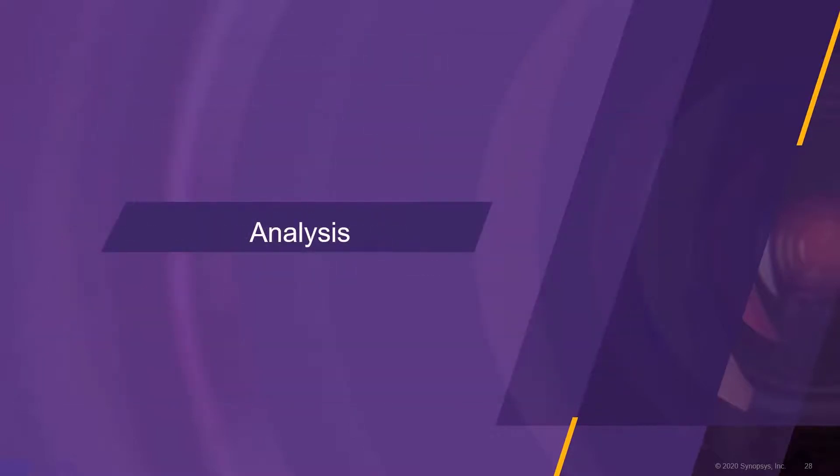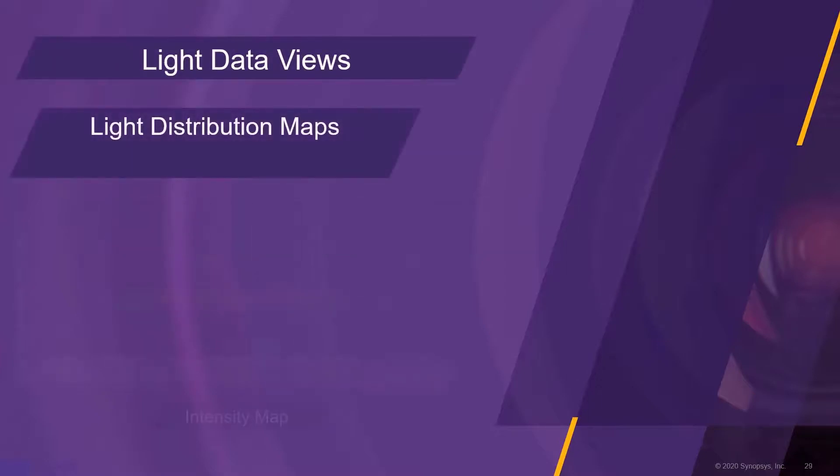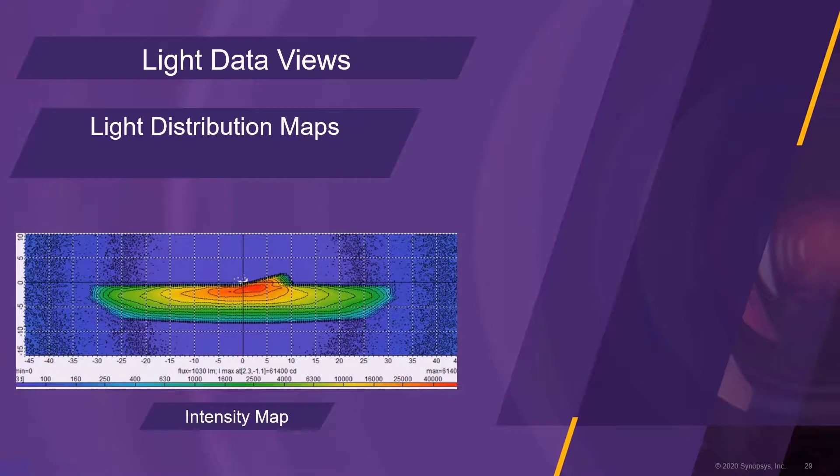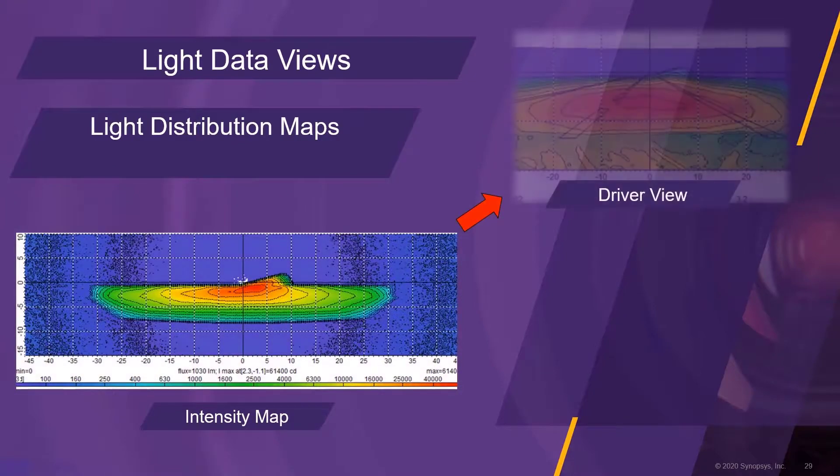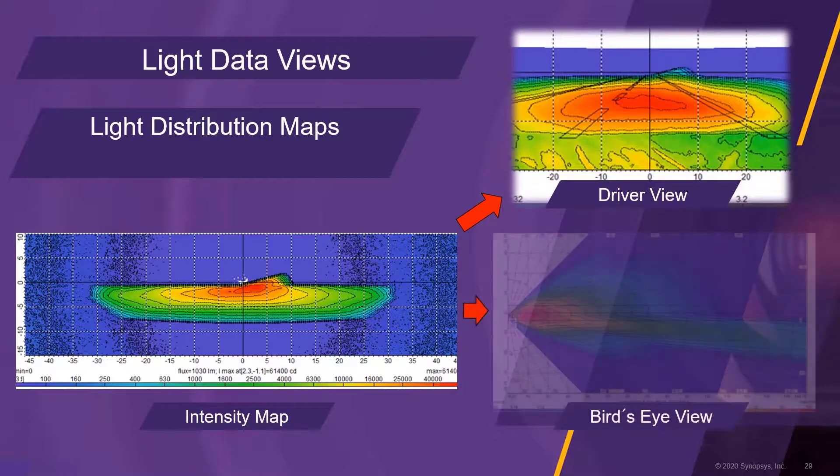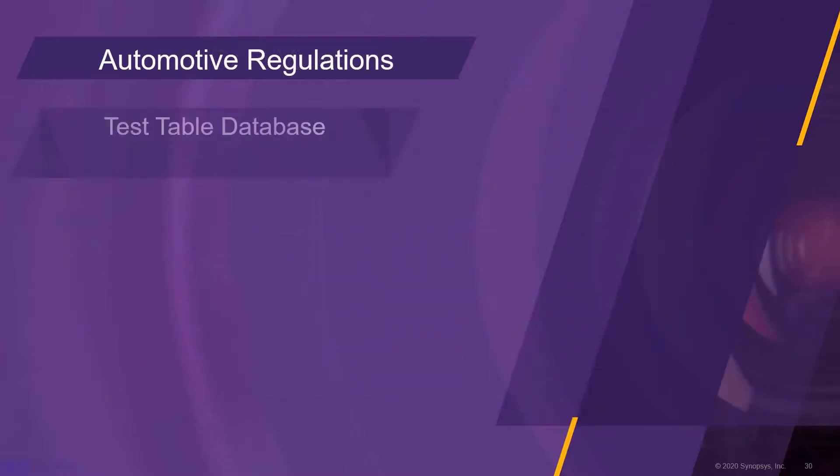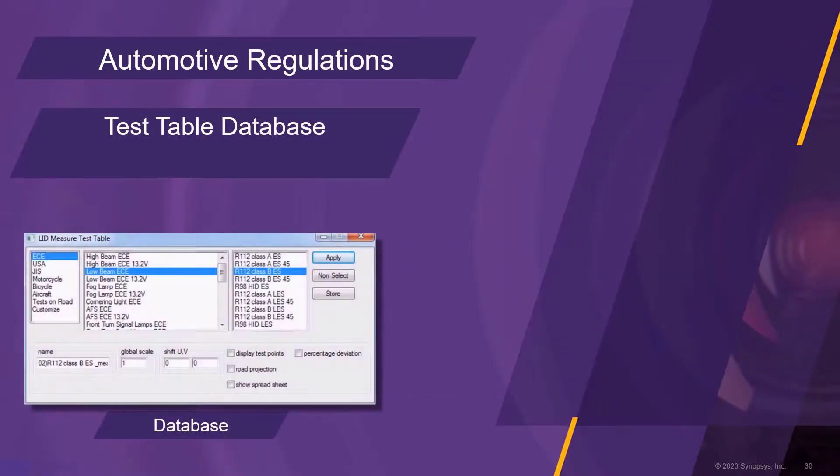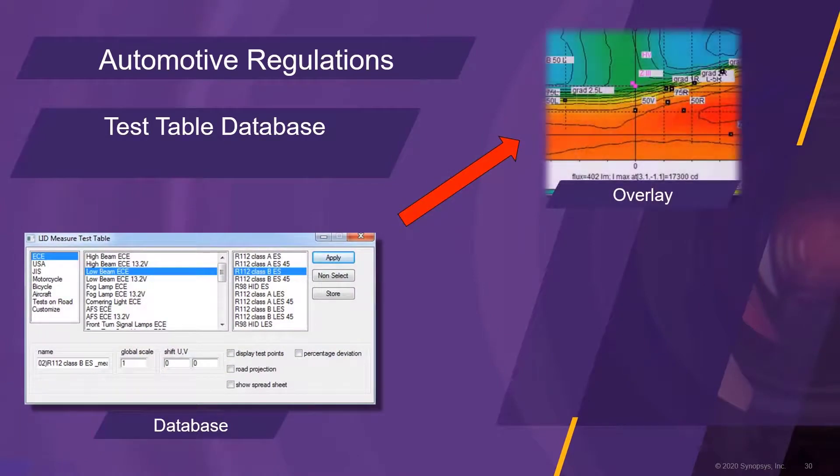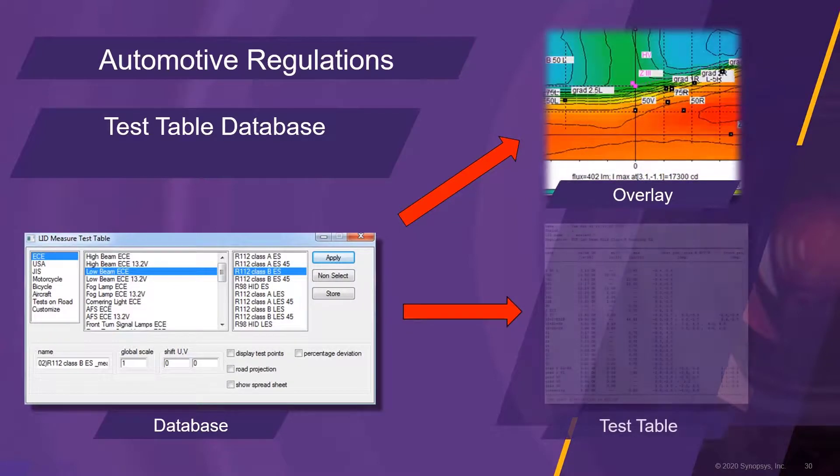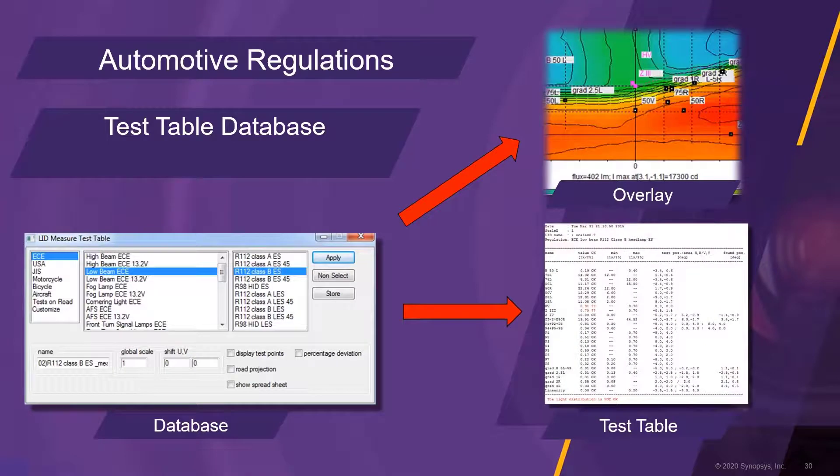The analysis chapter outlines methods how to visualize, investigate and test simulation data. The standard format to display light distribution data is a false color plot with ISO lines. An intensity map can then be transformed into a driver view or bird's eye view. LucidShape CAA offers a database with over 500 test tables for automotive regulations. These test tables can be applied to any intensity plot. The results are displayed in a table, clearly indicating which test points failed. The test points can also be displayed inside the intensity map.